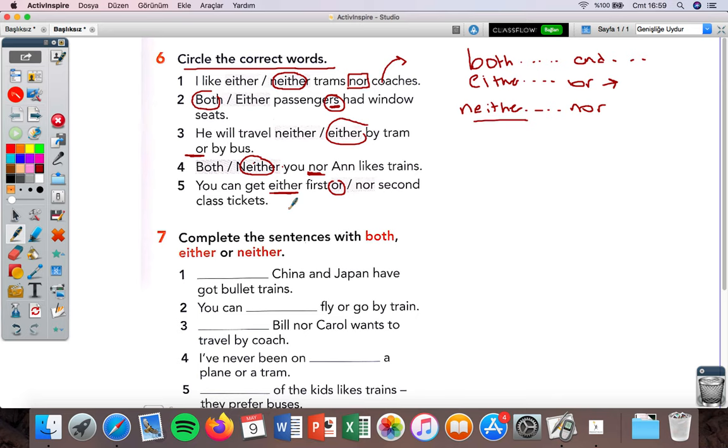Number five: you can get either first or or nor second class tickets. So either is here, either is used with 'or', so I should choose 'or'. You can get either first or second class tickets. First class tickets are expensive. For example, if you buy first class tickets from a plane or a theater, it means that your seat is in front of the stage. This is first class tickets. If your seat is at the back, back side of the room, this is second class. This is cheaper than first class.